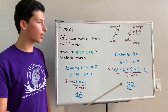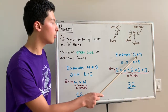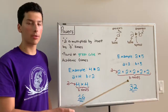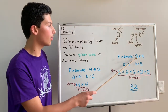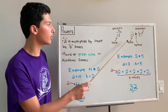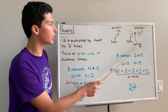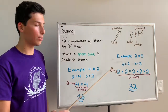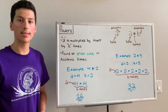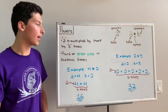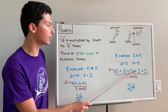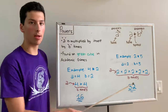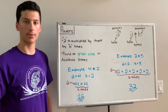Looking at this other example, 2 to the power of 5: a is 2 and b, the exponent, is 5. So we take a, which is 2, and multiply it by itself 5 times to get 2 times 2 times 2 times 2 times 2. When you multiply that together, you get 32, which is the answer.